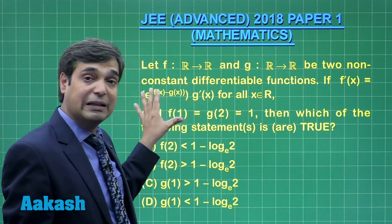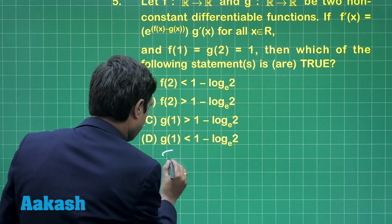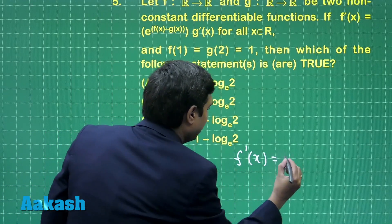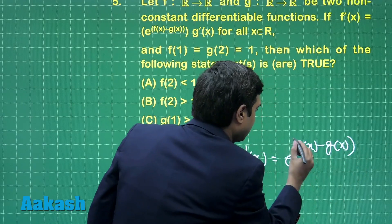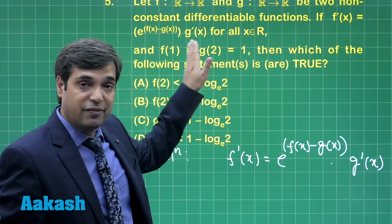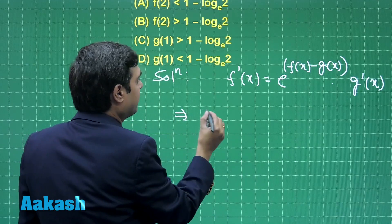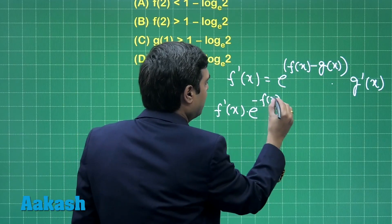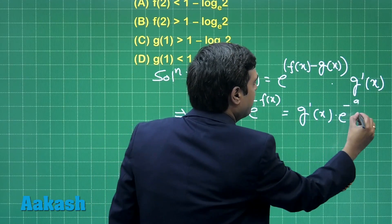We have to start with the given equation: f'(x) is equal to e to the power (f(x) minus g(x)) multiplied with g'(x). Let us rewrite this equation as f'(x) into e to the power minus f(x) is equal to g'(x) into e to the power minus g(x).